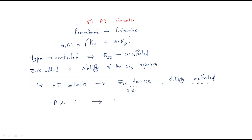If you add the PD controller, there is no effect on the steady state error — steady state error is unaffected. But it improves stability because a zero is added. So the PI controller decreases steady state error but cannot change stability, while the PD controller improves stability but does not affect steady state error.